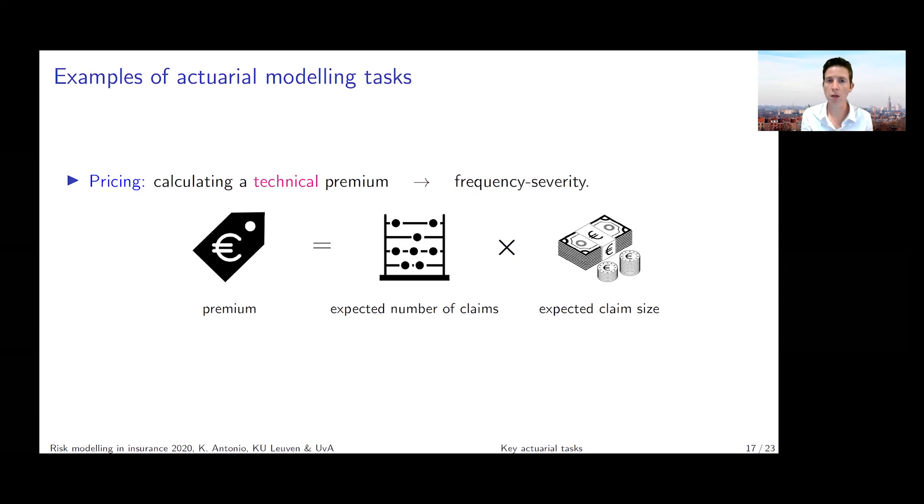In this case, you're offering an insurance coverage over a specified period of time. You offer the policyholder the promise that you will take care of his or her financial losses under certain conditions and contract specifications. You need to price this product before you can observe what's going to happen over the insured period for this particular policyholder. That's what we mean with this inverted production cycle of the insurance business.